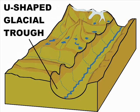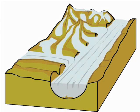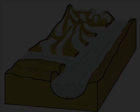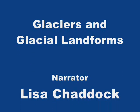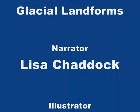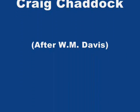U-shaped glacial trough. After the trunk and tributaries of a glacier recede, a U-shaped glacial trough remains.